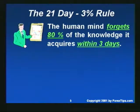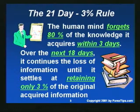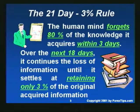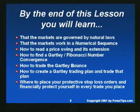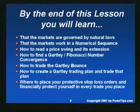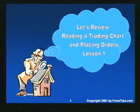We have the 21-day, 3% rule. The human mind forgets 80% of the knowledge it acquires within three days, and over the next 18 days it continues losing information until it retains only 3% of the original acquired information — if you don't use it, you lose it. Play this lesson over and over again until you understand and can apply it. By the end of this lesson you will learn: that markets are governed by natural laws; that markets work in a numerical sequence; how to read a price swing and its extension; how to find a Gartley and Fibonacci numerical convergence; how to trade the Gartley bounce; how to create a Gartley trading plan; and where to place your protective stop-loss order.